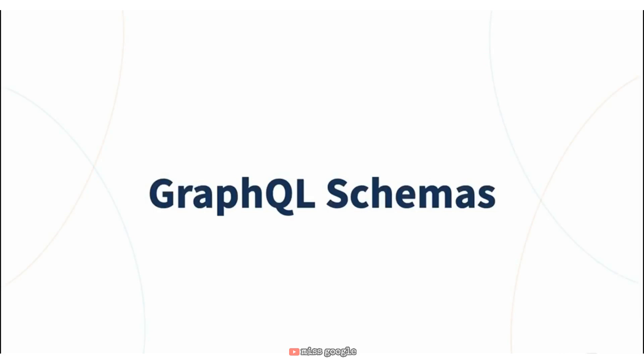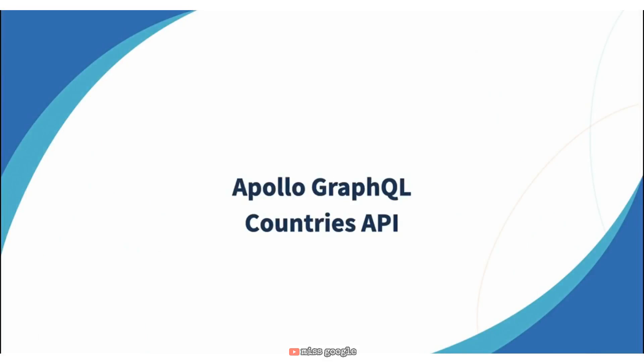We're going to go through the process of building a GraphQL schema as part of this course, but one of the benefits of GraphQL being so popular is that there are several free and available schemas. We're going to take a look at one of those before we build our own — specifically the Countries API written by Trevor Blades, which is a very popular API for doing basic work with GraphQL.